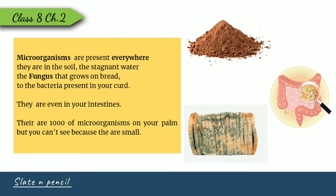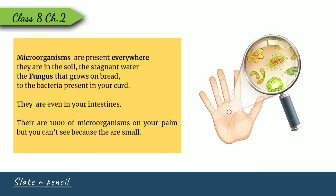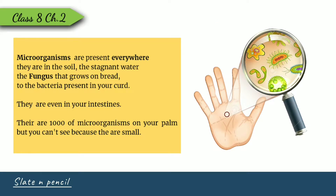They are found in the soil, stagnant water, and pond water. They even grow in breadcrumbs over a long time. There are thousands and thousands of microorganisms on your palm at any time, but you cannot see them because they are too small to be seen by the naked eye.